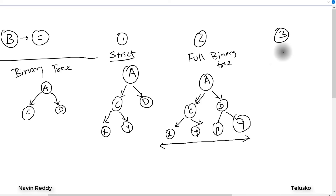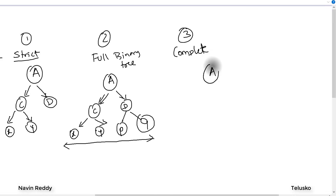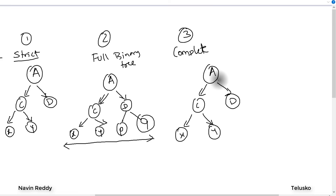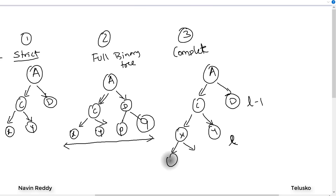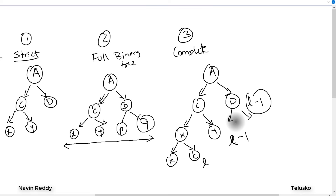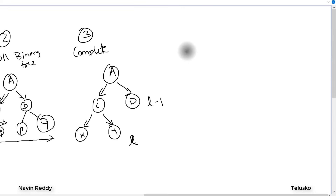The third type is a complete binary tree. A binary tree is complete when all nodes are filled up to a level L, and the last level is either L or L minus one. For example, A has C and D, C has X and Y — that's complete. But if you add only one or two extra nodes not filling the level fully, it may not be a complete binary tree.